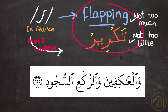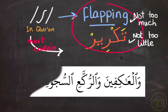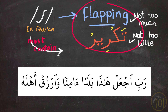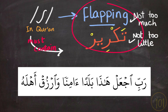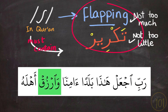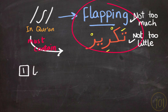Now those were the two extremes — the first one with too much and the second one with too little. Now let's see how it should sound. Finding the balance of flapping, not too much and not too little of it, is very important. And that was the first thing you needed to know to get the Qur'anic Ra correctly.